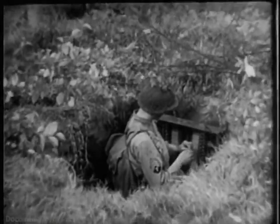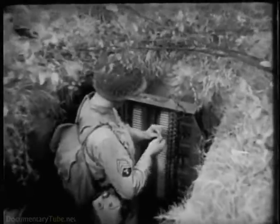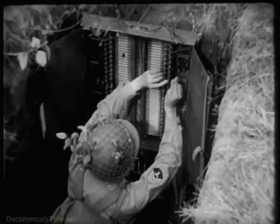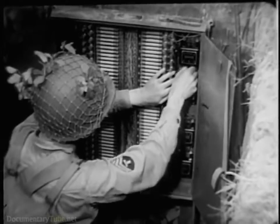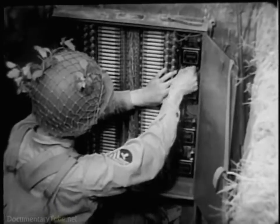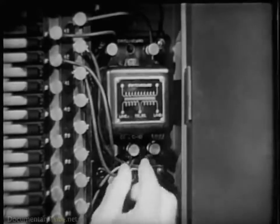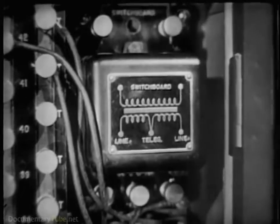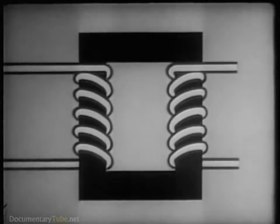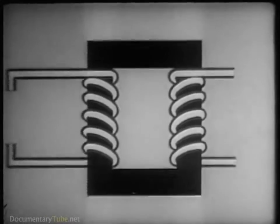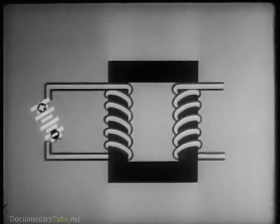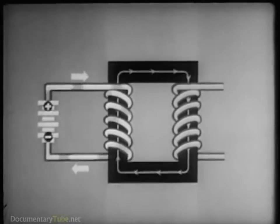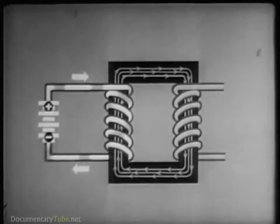The easiest solution is to use simplex and phantom circuits. The basic device used in establishing these circuits is the repeating coil. This is nothing more than a small transformer; it consists essentially of an iron core and two windings. Here's what happens when we send direct current through one of the windings: a magnetic flux builds up in the core.